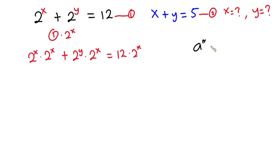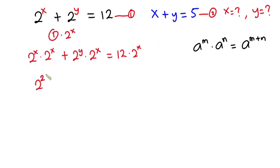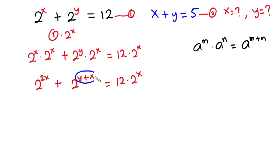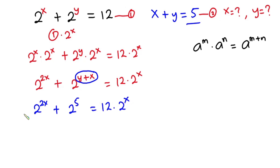From indices, if I have a to the power m times a to the power n, this is the same as a to the power m plus n. So I can write this as 2 to the power 2x, plus 2 to the power y plus x, and this is equal to 12 times 2 to the power x. From equation 2 we know y plus x is 5, so in place of that I'm going to put 5. So we have 2 to the power 2x plus 2 to the power 5 is equal to 12 times 2 to the power x.